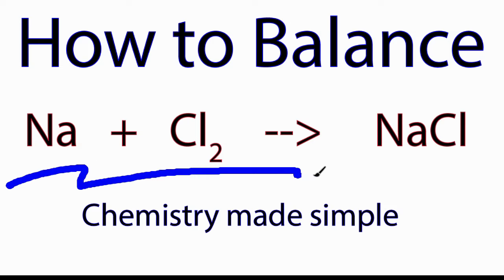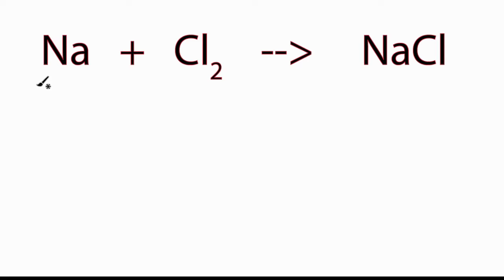How to balance Na plus Cl2 yields NaCl. Step 1. Let's count the atoms. I'll draw a table between reactants and products, and then we'll count the atoms.